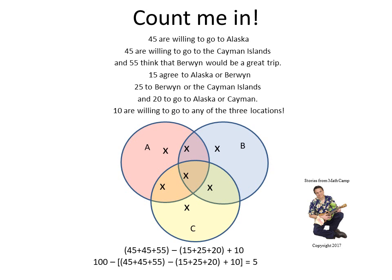Therefore, the final answer is still five, but you can do that without thinking too much. If you have four, five, or six destinations, which would be very difficult to draw, you simply do the same procedure: add, subtract, add, subtract, add, subtract.